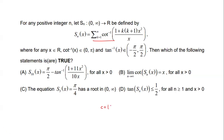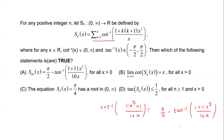We know that cot inverse of something equals π/2 minus tan inverse of that same thing. So for all x greater than 0, the summation up to 10 terms equals π/2 minus tan inverse of (1 + 11x²) divided by 10x. So this option is correct.